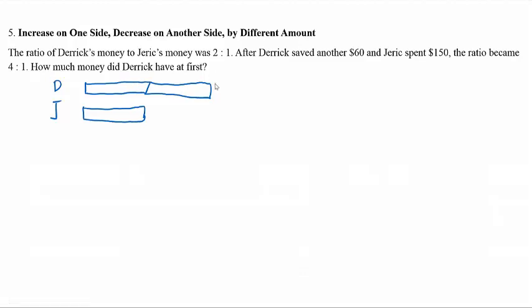So when Derek saved $60, you must use a line over here because it's an increase. Derek saved $60 while Jerry spent $150. The money, this part here, is gone already. While Derek has additional part over here. The ratio becomes 4 to 1.